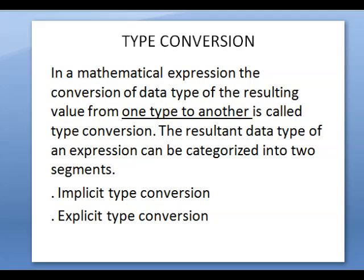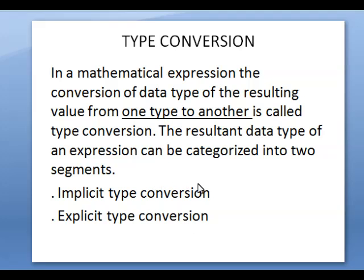Next is type conversion. In a mathematical expression, type conversion is the conversion of the data type of a resulting value from one type to another. For example, converting an integer into a float — that is one type to another — is called type conversion. The resultant data type of an expression can be categorized into two types: implicit type conversion and explicit type conversion.